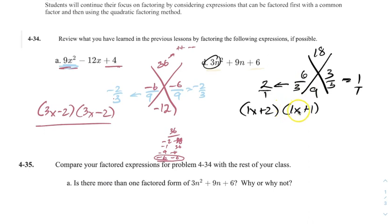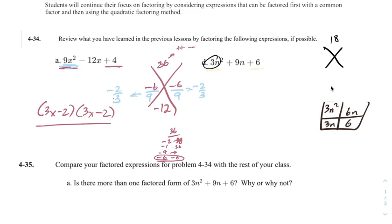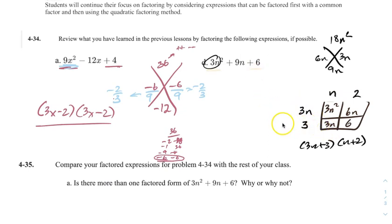Now you should notice something here — that does not give me 3N squared plus 9N plus 6. If you multiply out the first example it works, but here it doesn't. There's an issue with this one. Even if we do the area model instead: if I broke it to 6 and 3 and did the area model, I get 3N plus 3 times N plus 2. So the area model works out, but the shortcut method doesn't give something efficient — we'll talk about it.